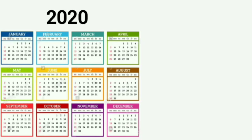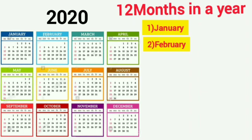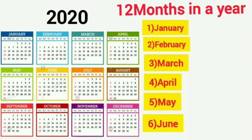In the calendar there are 12 months. First month is January. Second month is February. Third month is March. Fourth month is April. Fifth month is May. Sixth month is June. Seventh month is July. Eighth month is August.